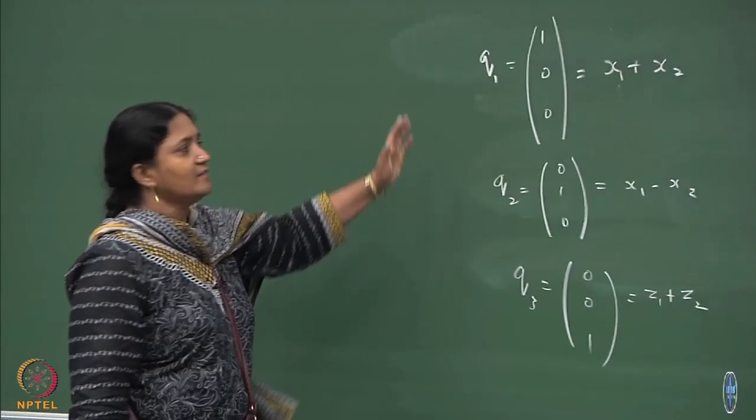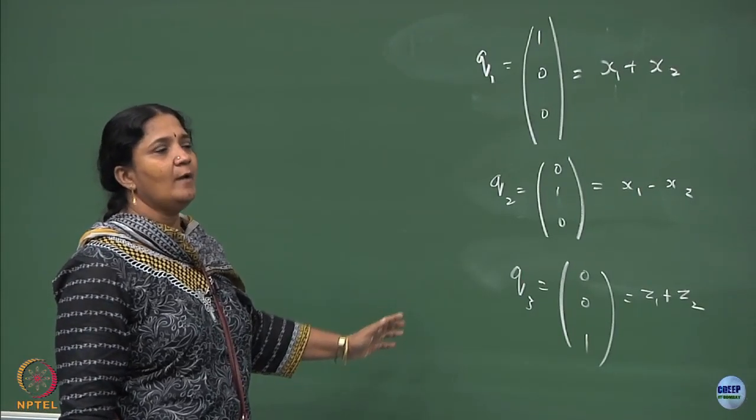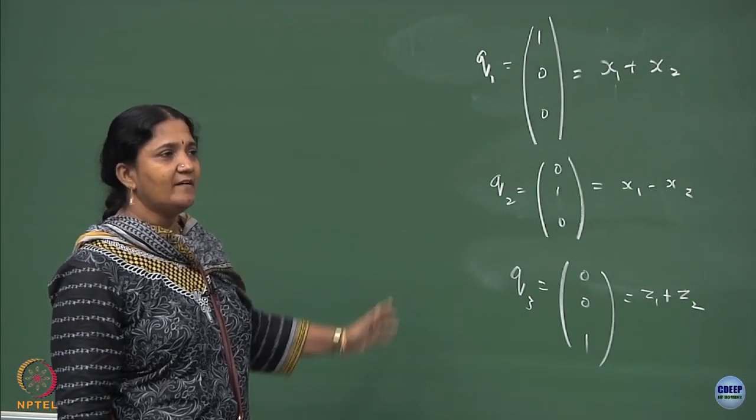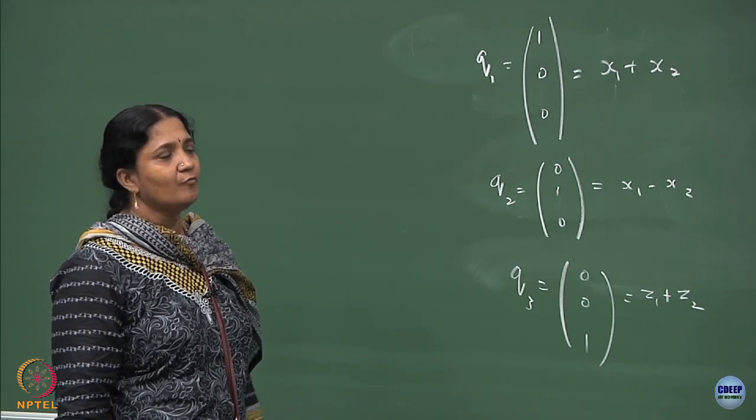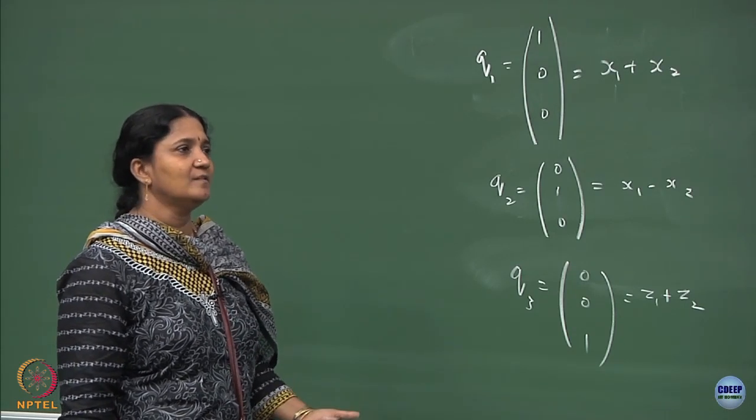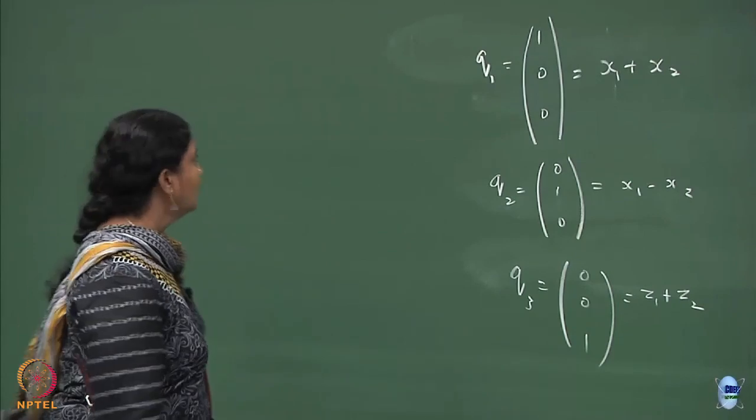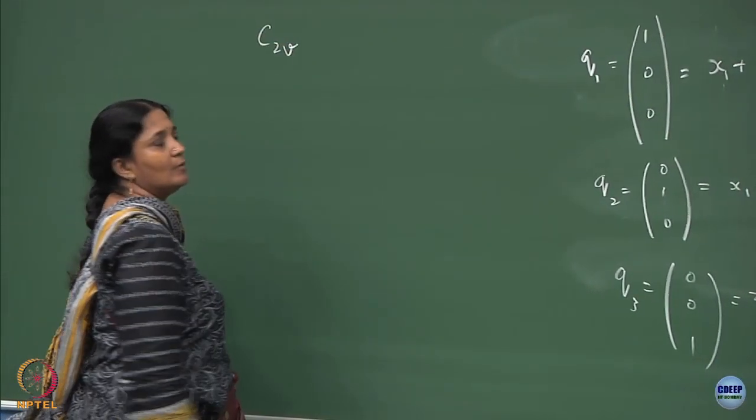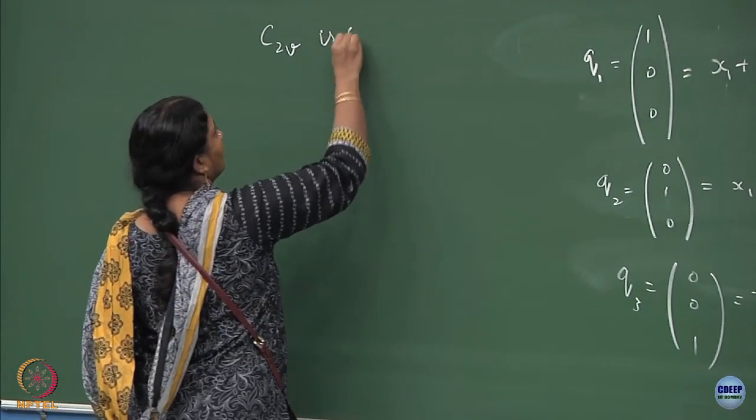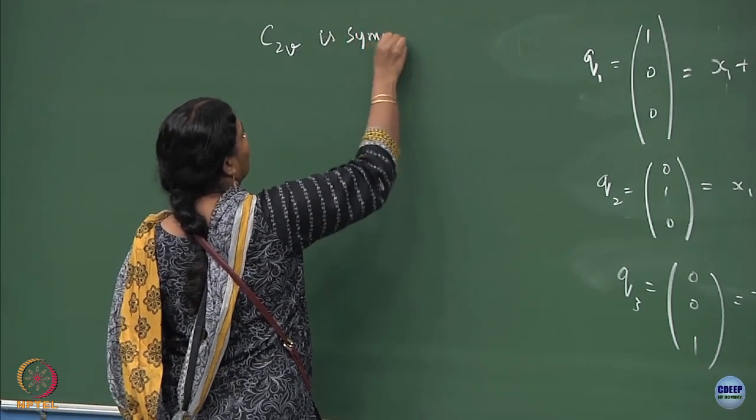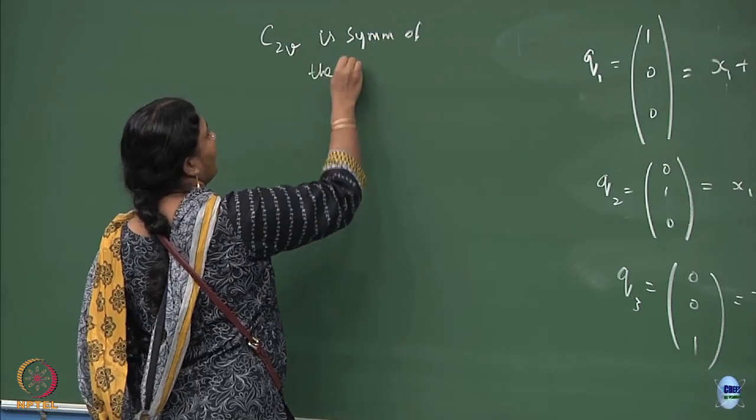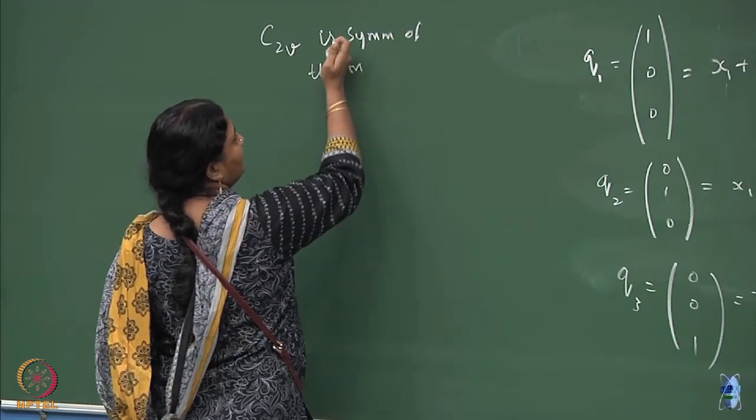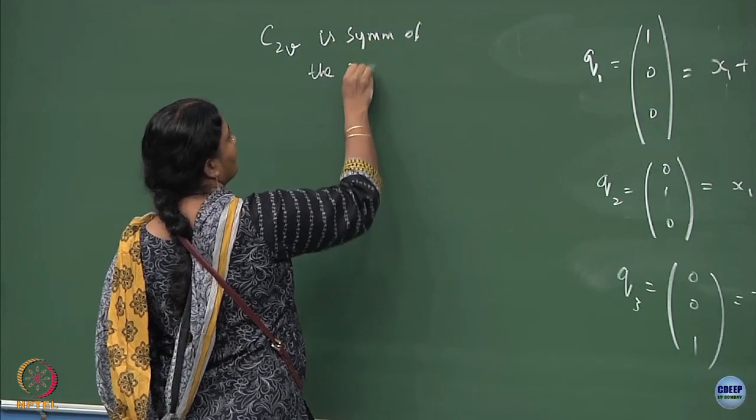Now, in this space I want to write the matrix representations of all the elements of the C2v symmetry. C2v is a symmetry of the non-linear triatomic molecule.